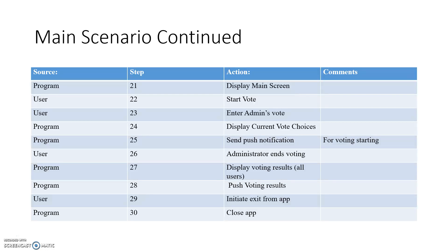At step twenty-one, the program displays the main screen. At step twenty-two, the user chooses to start a vote. At step twenty-three, the user enters their own vote as they are the admin. At step twenty-four, the program displays the current vote choices, which will only be the admin's choice. Step twenty-five, the program sends a push notification for voting starting. At step twenty-six, the administrator ends the voting. At step twenty-seven, all the votes are gathered up and displayed. At step twenty-eight, push voting results are sent by the program to all the users. At step twenty-nine, the user initiates exit from the app. Step thirty, the app is closed.